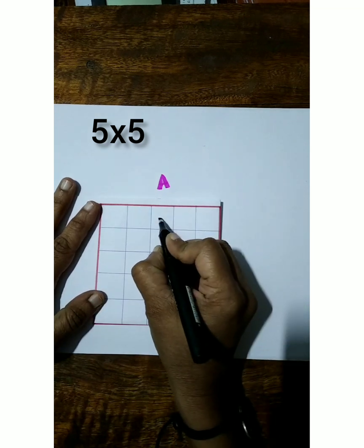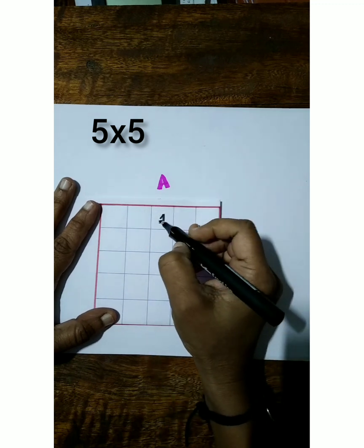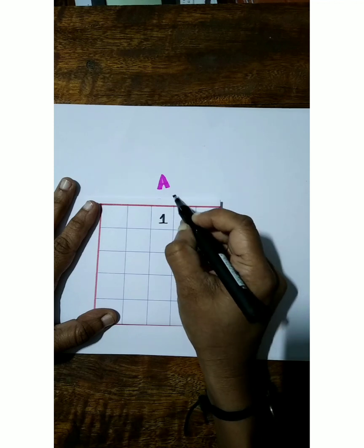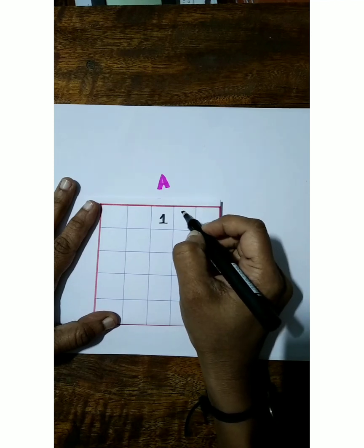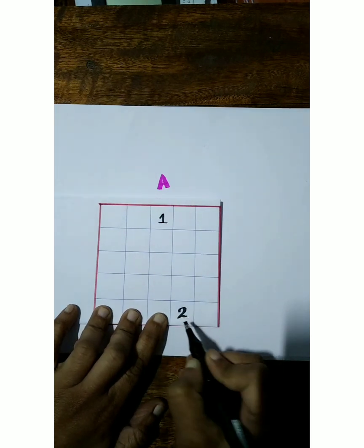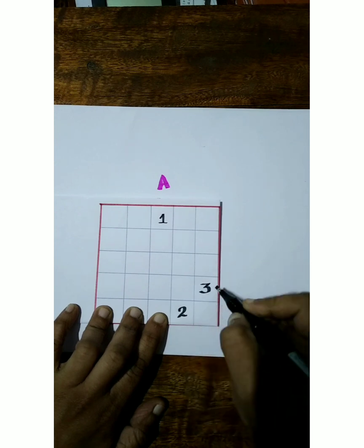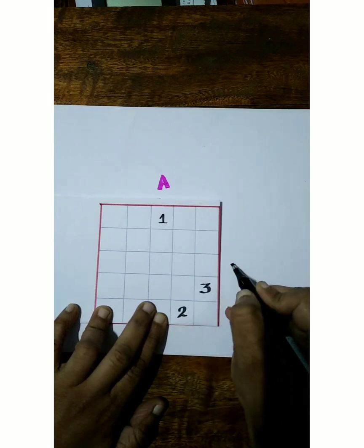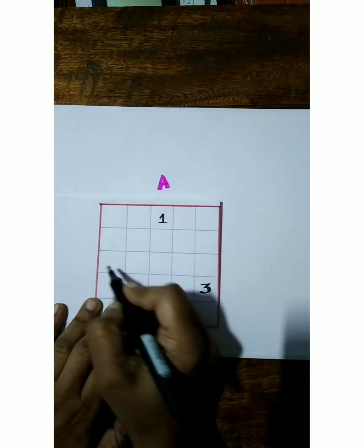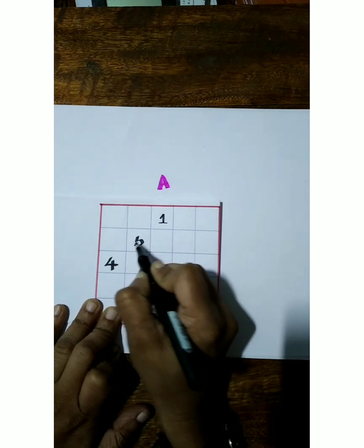Now diagonal of this box is this one, but here no boxes, see. So we can move to column end and mark here 2. Now diagonal of this box is this one, so mark 3. And diagonal of this box is here, but there is no box, so we can move to row end and mark here 4.